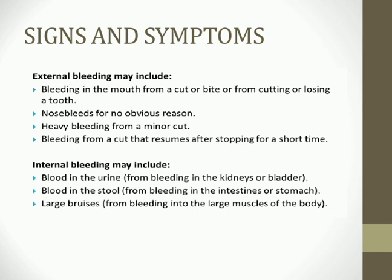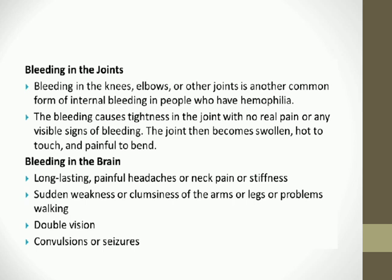Bleeding into large muscles causes large bruises (ecchymosis). Joint bleeding — commonly in knees and elbows — initially causes tightness with no pain, but later the joint becomes swollen, hot to touch, and very painful to bend. Bleeding in the brain is very serious, presenting with long-lasting headaches, neck pain, nuchal rigidity, sudden weakness of arms or legs, double vision, or convulsions.